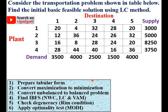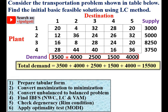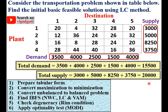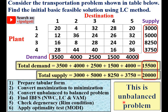Next, convert maximization to minimization. By default, you can assume the transportation problem is a minimization if it is not mentioned otherwise. Third, convert unbalanced to balanced. Calculate the total demand — the summation of all demand values is 15,500. Calculate the total supply — the summation of all supply values is 20,000. Since total demand is not equal to total supply, this is an unbalanced problem and must be converted to a balanced one.